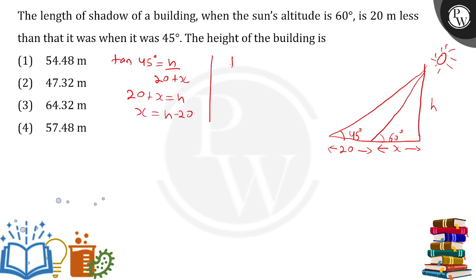Similarly for the other triangle, I will be repeating the same. Tan 60 degrees equals h upon x. I am interested in the x part. So this comes out to be h upon root 3.